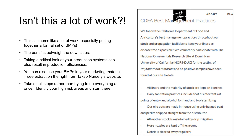You may be thinking that all this seems like an awful lot of work, but the benefits of having a robust nursery hygiene program can outweigh the downsides, especially if that downside is your business being ordered to close. Taking a critical look at your production systems can also result in production efficiencies. Walla Walla Nursery in Washington was one of the pilot nurseries in the SANC program and it reported a significant increase in efficiency after going through the accreditation process because it forced them to take a critical look at their production processes. Finally, put a positive spin on it and use your adherence to BMPs in your marketing materials, as you can see in this extract from Takao Nursery's website.